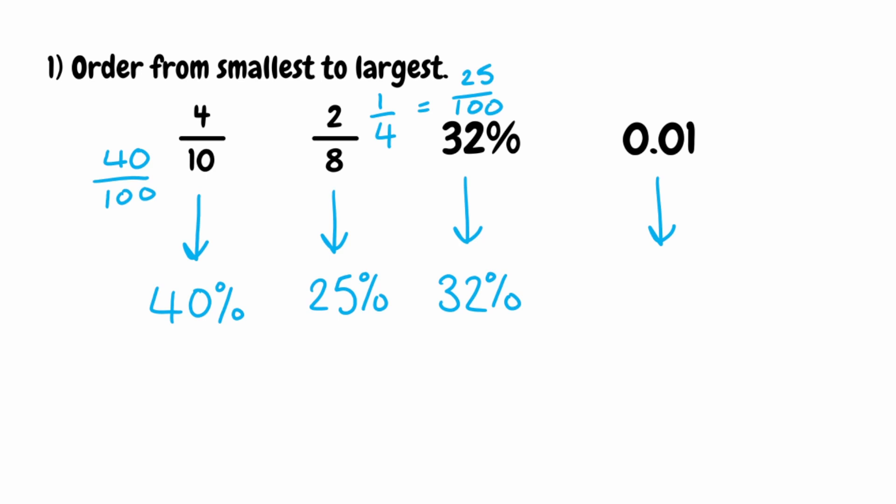Finally, we've got 0.01. We want to convert a decimal to a percentage. To get from a decimal to a percentage, all we need to do is multiply by 100, which means all the digits move two places to the left. So that gives us 1%.